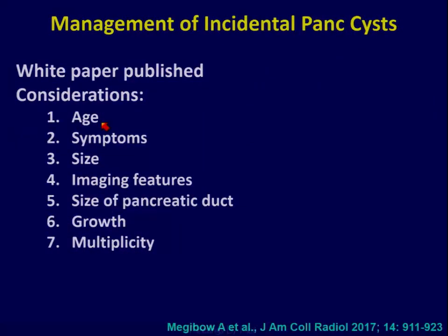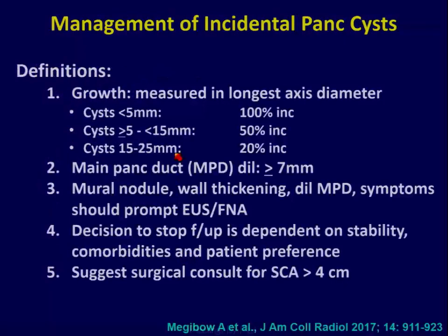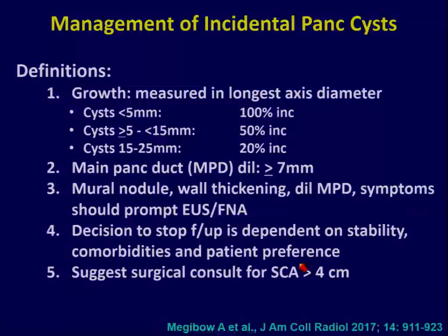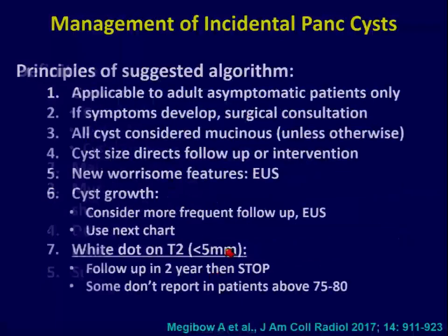The ACR white paper was led by Alec Megibow and several co-authors, looking at what to do with incidental lesions. We took into consideration age, symptoms, size, imaging features, size of the pancreatic duct, growth, and multiplicity. We defined growth thresholds, concerning features such as mural nodule, wall thickening, and dilated main duct — which should trigger EUS. For serous cysts above six centimeters, we recommended surgical consult.